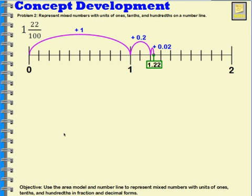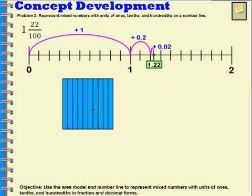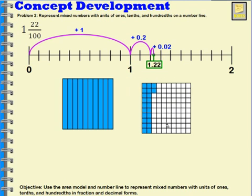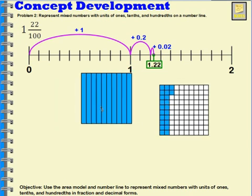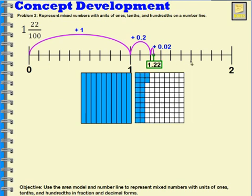If I want to show this with an area model, I can show it just like we did before — I have one whole shaded in and 22 of another. So the one whole takes us to the one on the number line, and the 22 parts out of the next whole is what this represents on the number line.